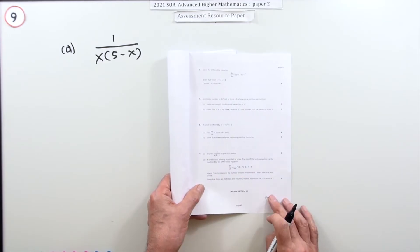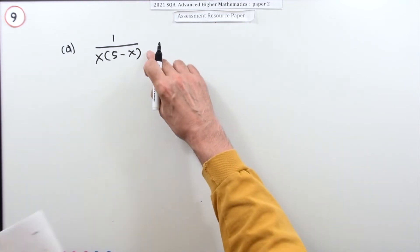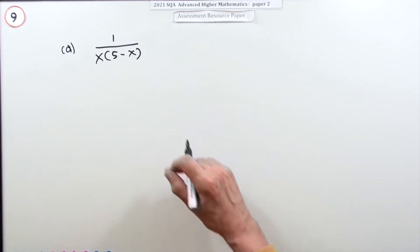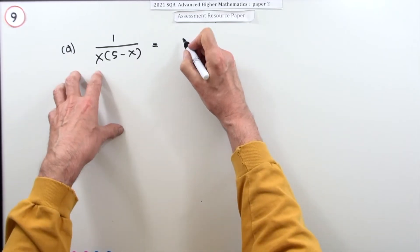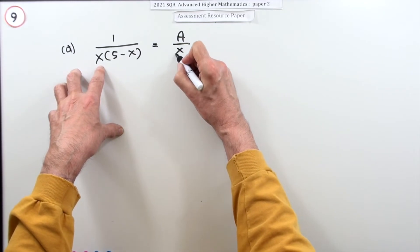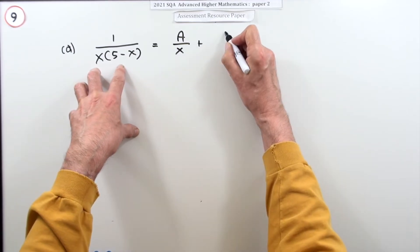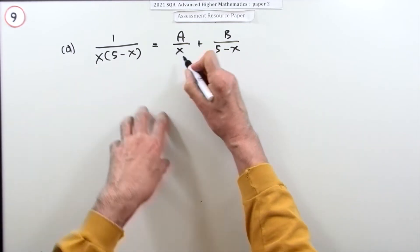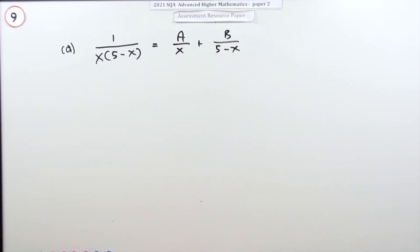Right, well it just says express that in partial fractions just for two marks. Well, if you were to express that in partial fractions, one of them would have to have a denominator of x and the other would have to have a denominator of 5 minus x. Those are the two linear denominators.